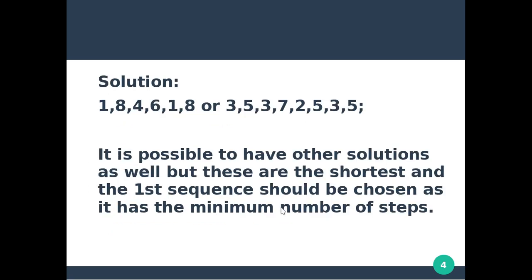We have two solutions, with two minimum steps paths for the problem — getting 4 liters of water in the 5-liter jug as the output. We have two solutions with minimum steps.